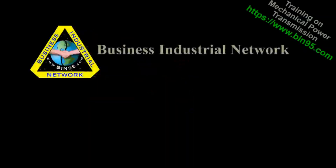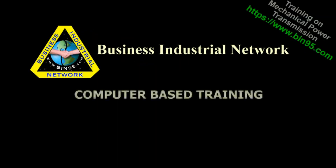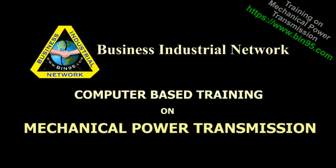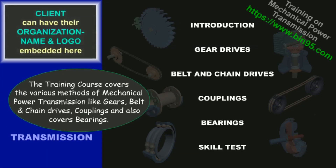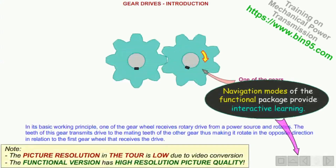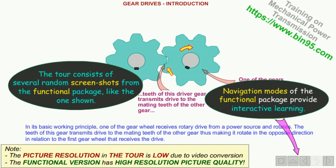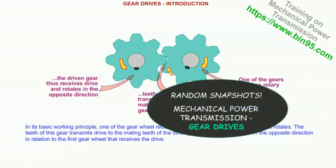Business Industrial Network proudly presents the computer-based training on mechanical power transmission. The training course covers the various methods of mechanical power transmission like gears, belt and chain drives, couplings, and also covers bearings. Navigation modes of the functional package provide interactive learning. The tour consists of several random screenshots from the functional package, like the one shown — gear drives.